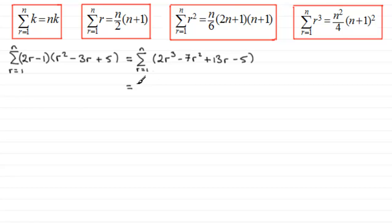For the first term, we pull out 2 in front of Sigma, so we've got 2 times Sigma r going from 1 to n of r cubed. If we do the same for the next term, we've got minus 7 times Sigma r going from 1 to n of r squared. For this term here, there'll be plus 13 times Sigma r going from 1 to n.